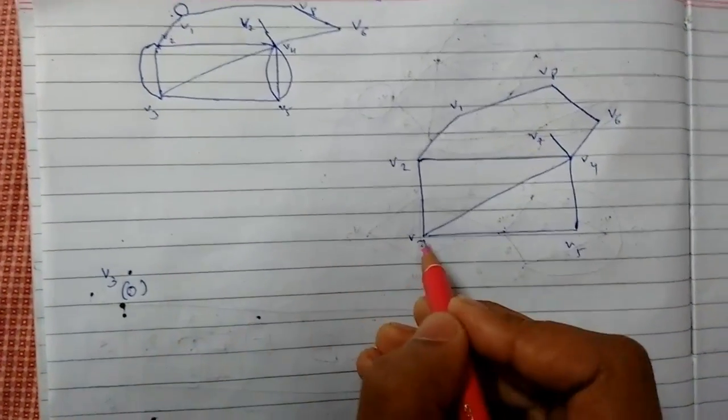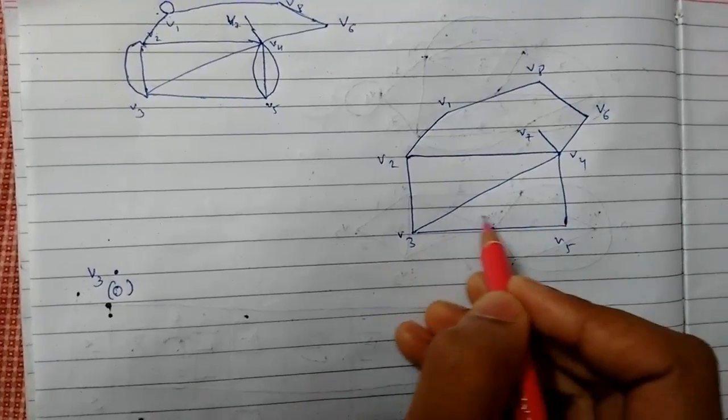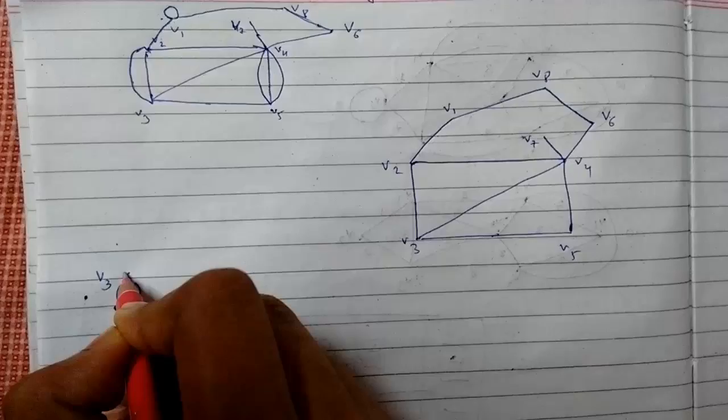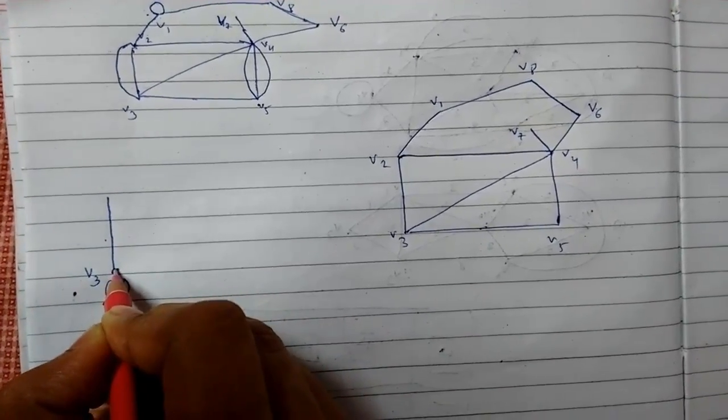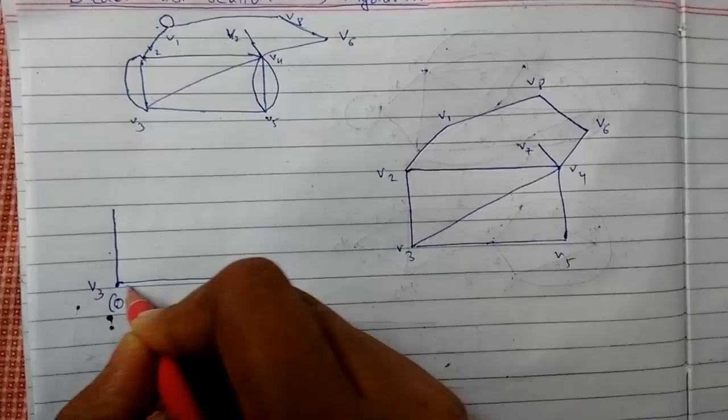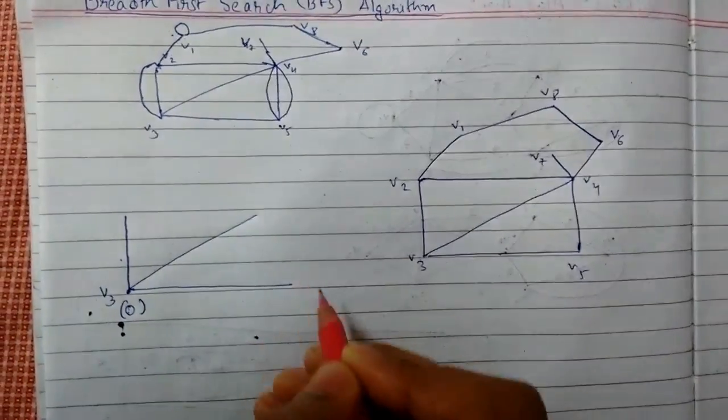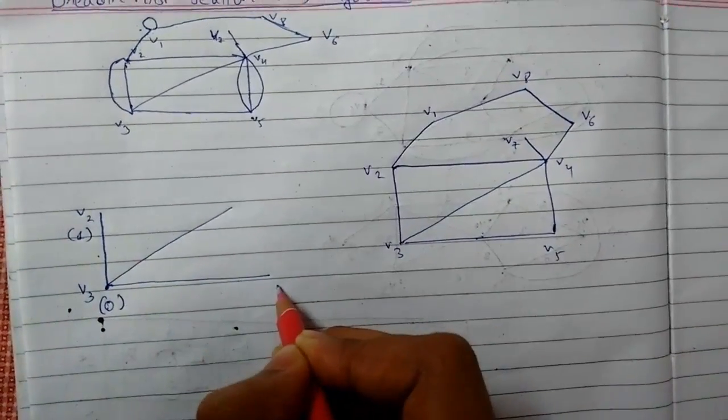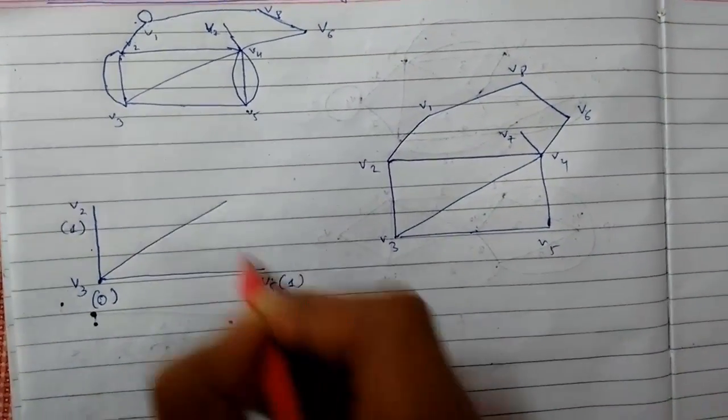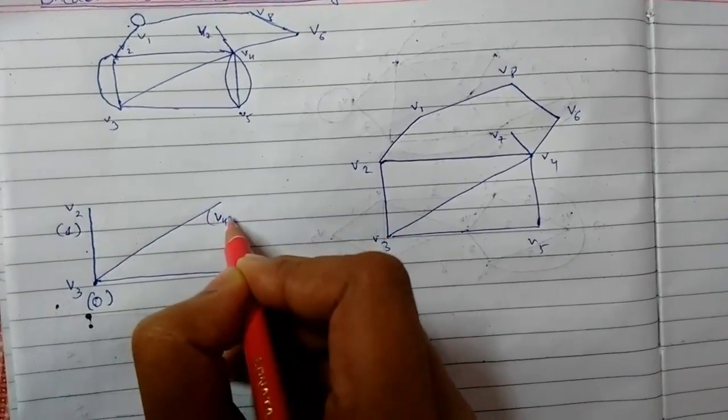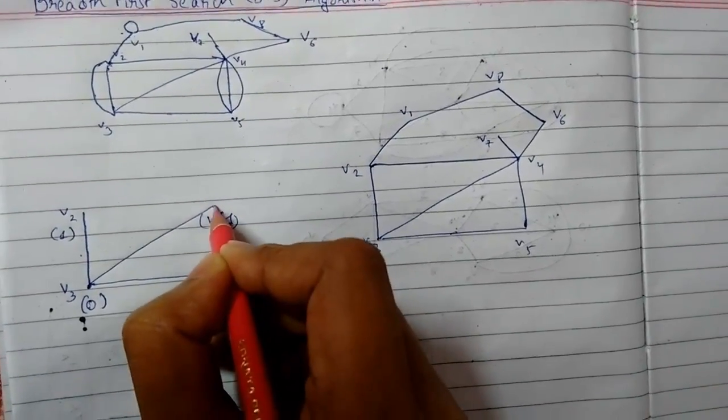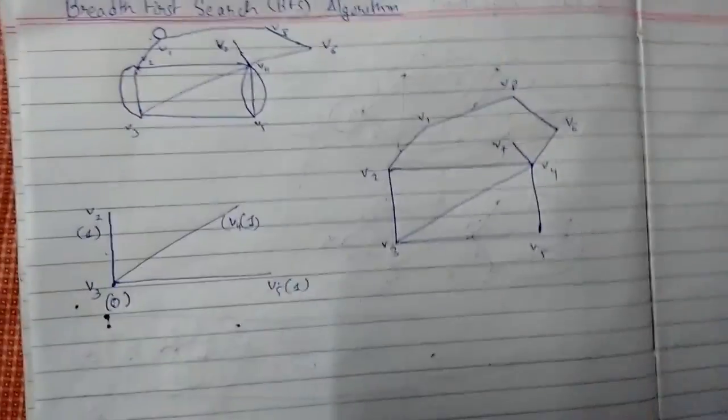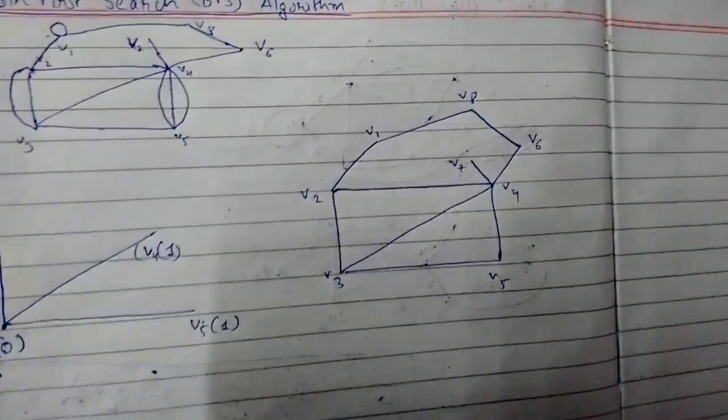Now we need to find all adjacent edges and label them as 1. We need to draw it according to the diagram. This was v2, so it will be labeled as 1, v5 as 1, and v4 is also 1. These are the adjacent edges of v3 and they are labeled as 1.